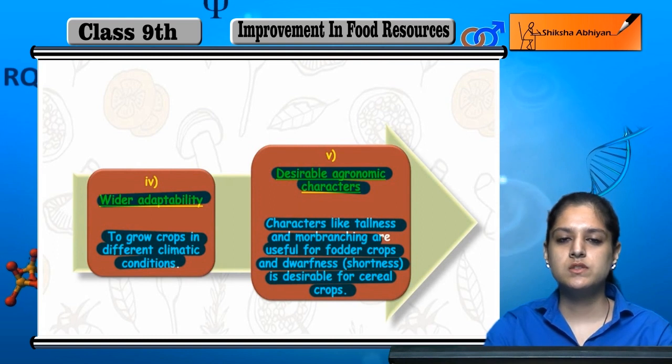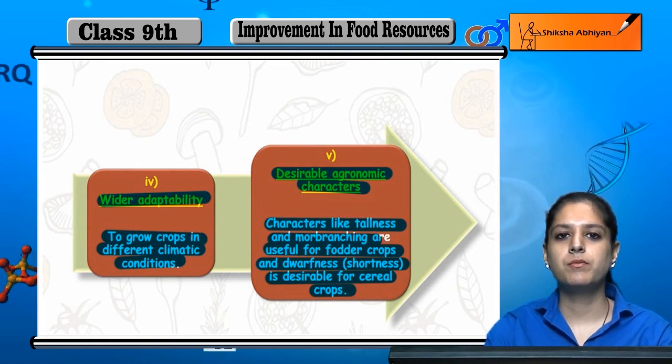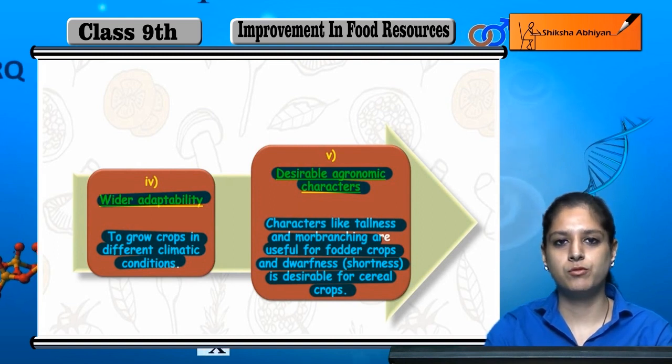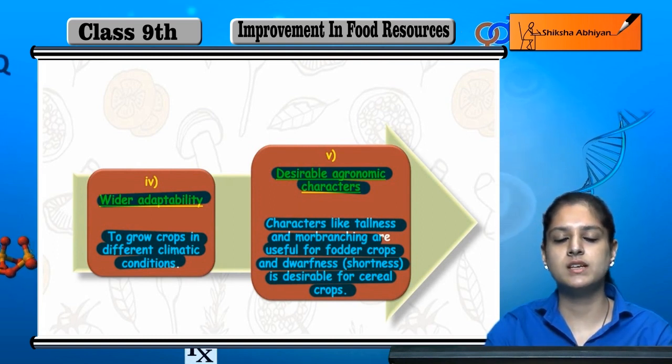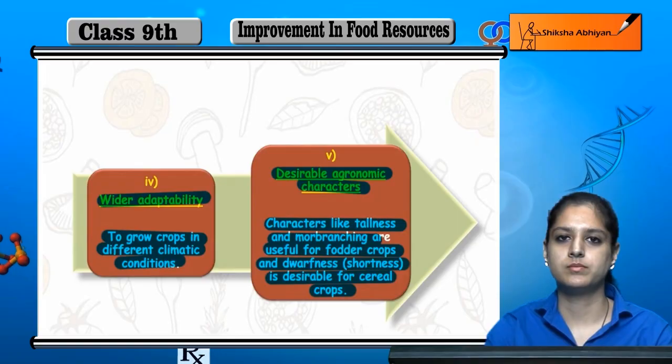So this was about crop variety improvement. We will now move on to the next criteria.